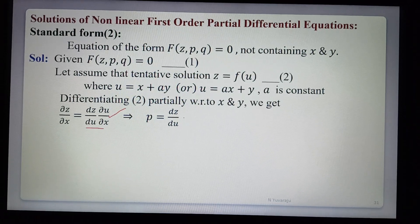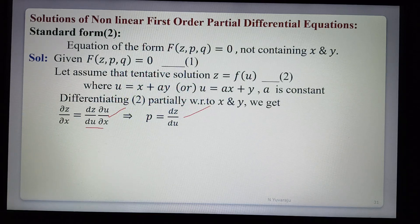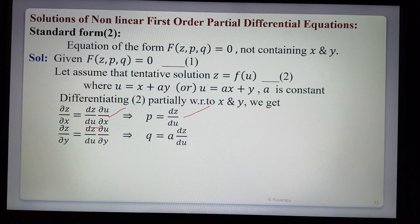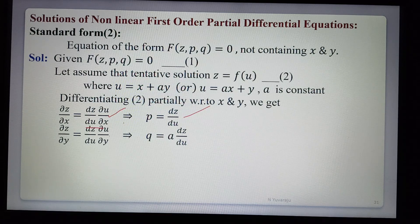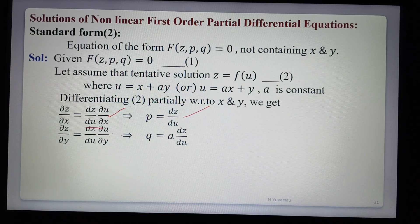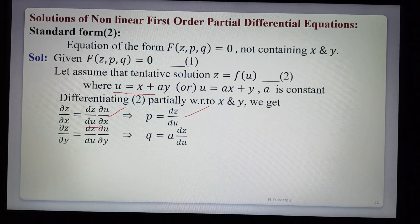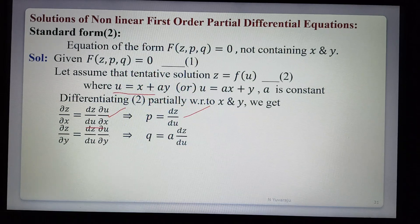So ∂z/∂x = dz/du · ∂u/∂x, giving p = dz/du. Similarly, ∂z/∂y = dz/du · ∂u/∂y, giving q = dz/du · ∂u/∂y. Choosing u = x + ay, we have ∂u/∂x = 1 and ∂u/∂y = a, so p = dz/du and q = a · dz/du.